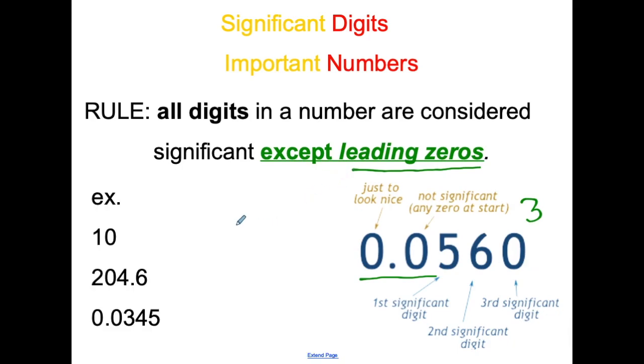I have some examples over here. So 10—the decimal place would be there, it's not written but you know it's there. We have this 1. Remember, the first non-zero from the left to the right, that's the first significant digit. This would be the second. So how many sig digs are here? Two. First, second, third, fourth. How many sig digs are here? Four significant digits.